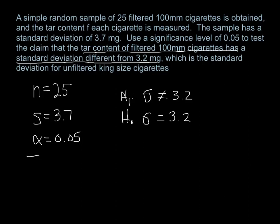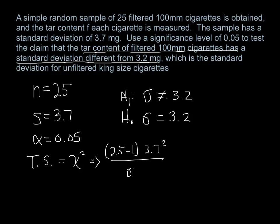Time to find our test statistic. Our test statistic is a chi-squared value: n minus 1 times s squared all over our population standard deviation squared, which from our claim is 3.2 squared. If we do the math and punch it in our calculator, our test statistic comes out to be 32.09.